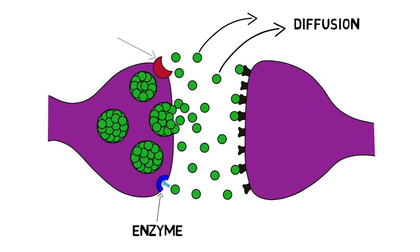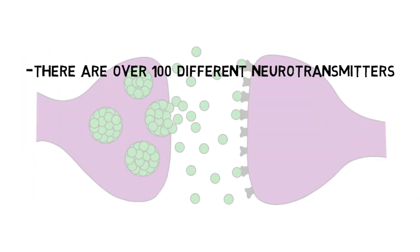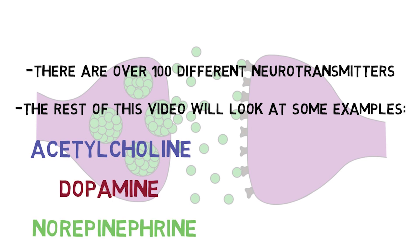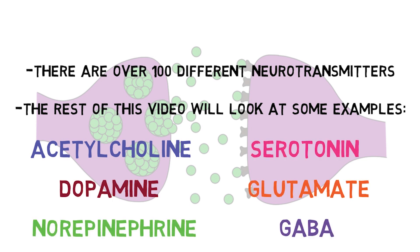Other synapses rely primarily on proteins called transport proteins, which remove neurotransmitters from the synaptic cleft and typically shuttle them back into the neuron that released them in a process called reuptake. There are over 100 different neurotransmitters, and probably many more yet to be discovered. They can be generally grouped into categories such as amine neurotransmitters, amino acids, neuropeptides, and even gas neurotransmitters. The rest of this video will explore some examples of our most studied neurotransmitters, although it's important to note that these are only a small selection of neurotransmitters overall.